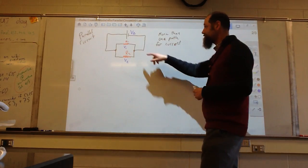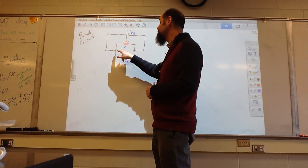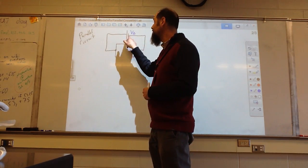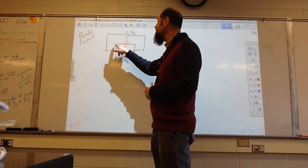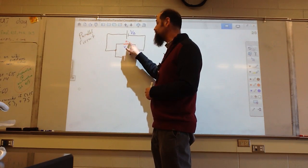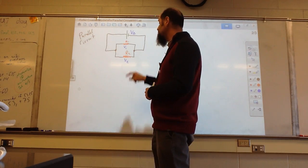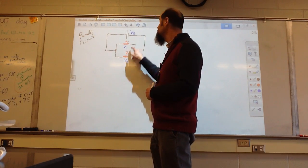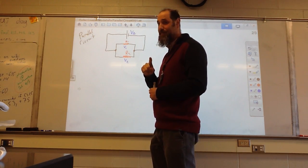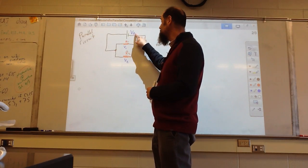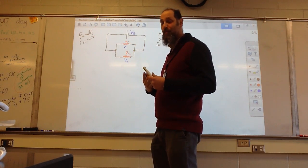So, parallel circuit — we have more than one path for the current to follow. With series there is just only one route, but here notice the route splits. Some of the current can go this way, some can go that way. What we noticed in the series circuit was that the two voltages added up to give you the battery voltage. That's not what we observed today in our lab — these voltages all seem to be really similar. Let's try to explain why.